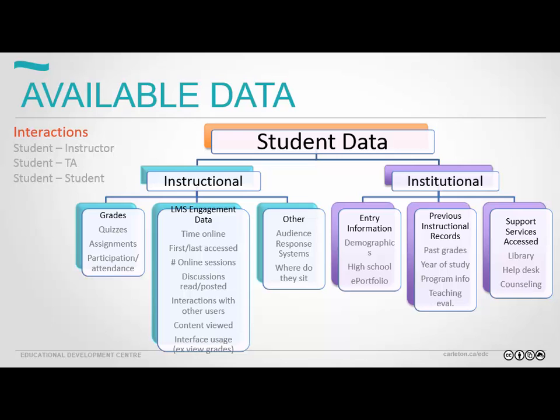Audience response systems — clickers or in-class polling — can also be a pretty good indicator of student engagement. Little things like where they sit, how early they pick up their textbook, and the first time they log into class are all fairly good indicators of how engaged a student is in this particular topic.